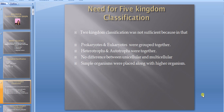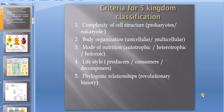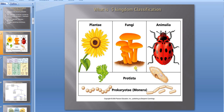Why do we need five kingdom classification? Two kingdom classification was not sufficient because prokaryotes and eukaryotes were grouped together, heterotrophs and autotrophs were grouped together, and no difference was made between unicellular and multicellular organisms. Simple organisms were placed along with higher organisms. The criteria for five kingdom classification include complexity of cell structure (prokaryote or eukaryote), body organization (unicellular or multicellular), and mode of nutrition (autotrophic or heterotrophic).